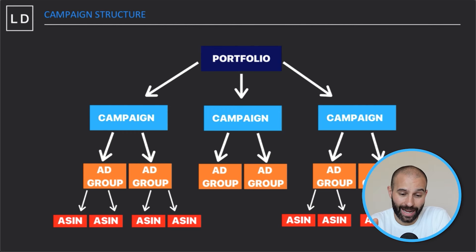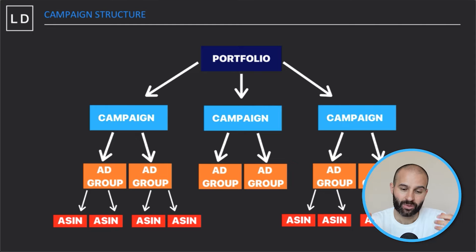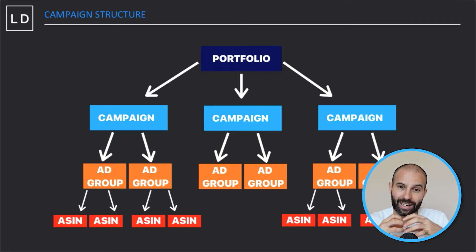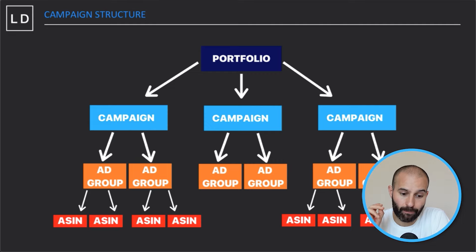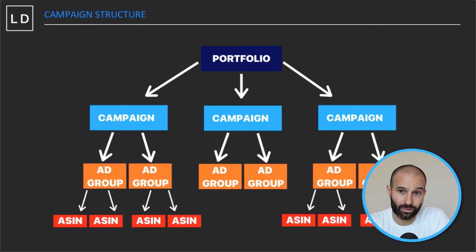Before we talk about which settings to use, let's quickly look at Amazon PPC campaign structure. At the top of the hierarchy we have portfolios — once you've created multiple campaigns, a portfolio is essentially a folder that links and files those campaigns together in one place. Next we have campaigns, which is what we're setting up now. Within each campaign you can have multiple ad groups, and within each ad group you can advertise multiple ASINs if you choose.